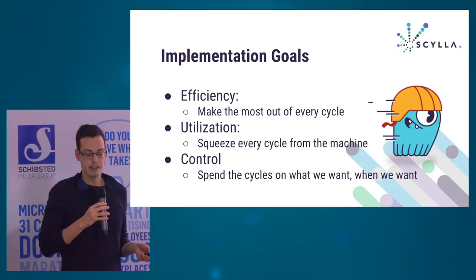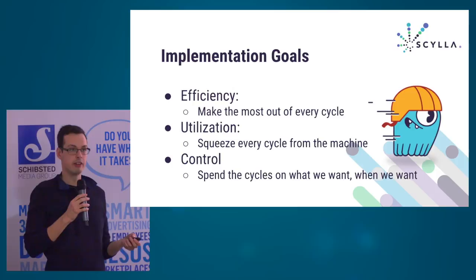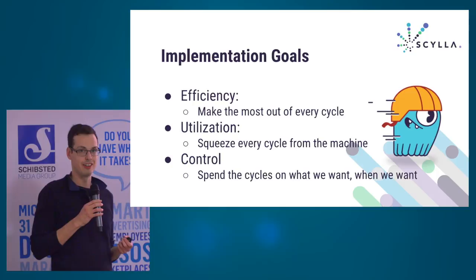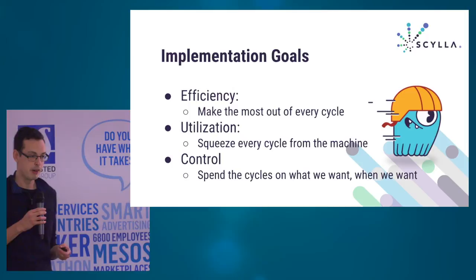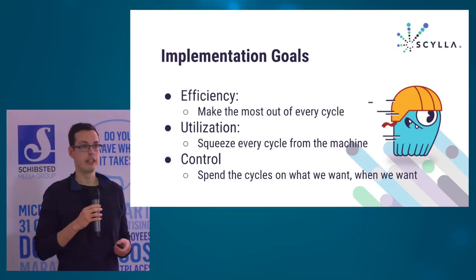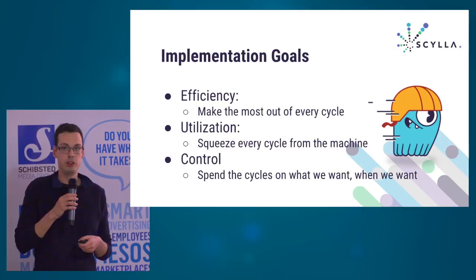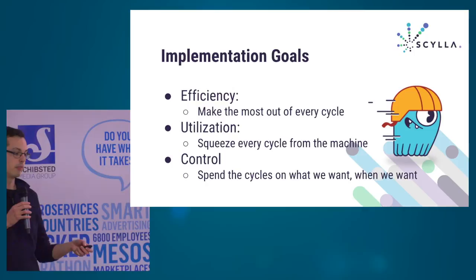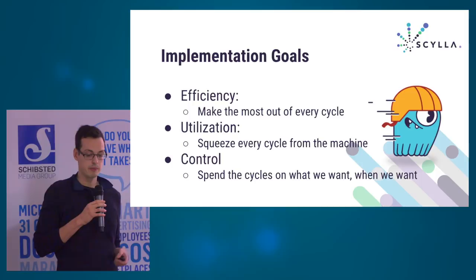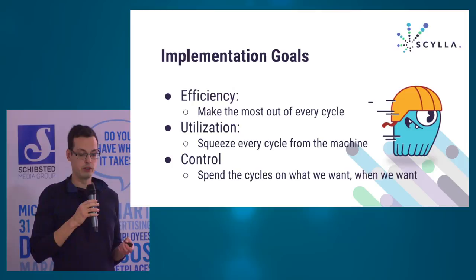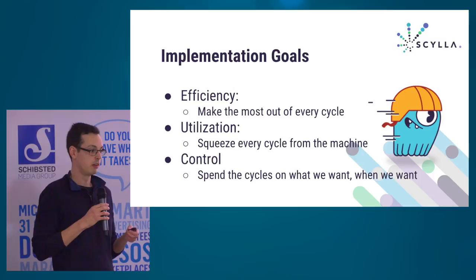Scylla and Cassandra share these algorithms, and still Scylla has much higher performance. It's not enough to rewrite it in C++ — you have to be very diligent about how you implement them. In particular, we have a set of guidelines: we want the implementation to be extremely efficient so no CPU cycle is ever wasted. We want it to utilize every resource of the machine — all CPUs, all disk bandwidth, and all network bandwidth. And finally, it's all about control. Control is key to achieving good latency: you want to be able to prioritize requests and specify exactly on which those CPU cycles will be spent.